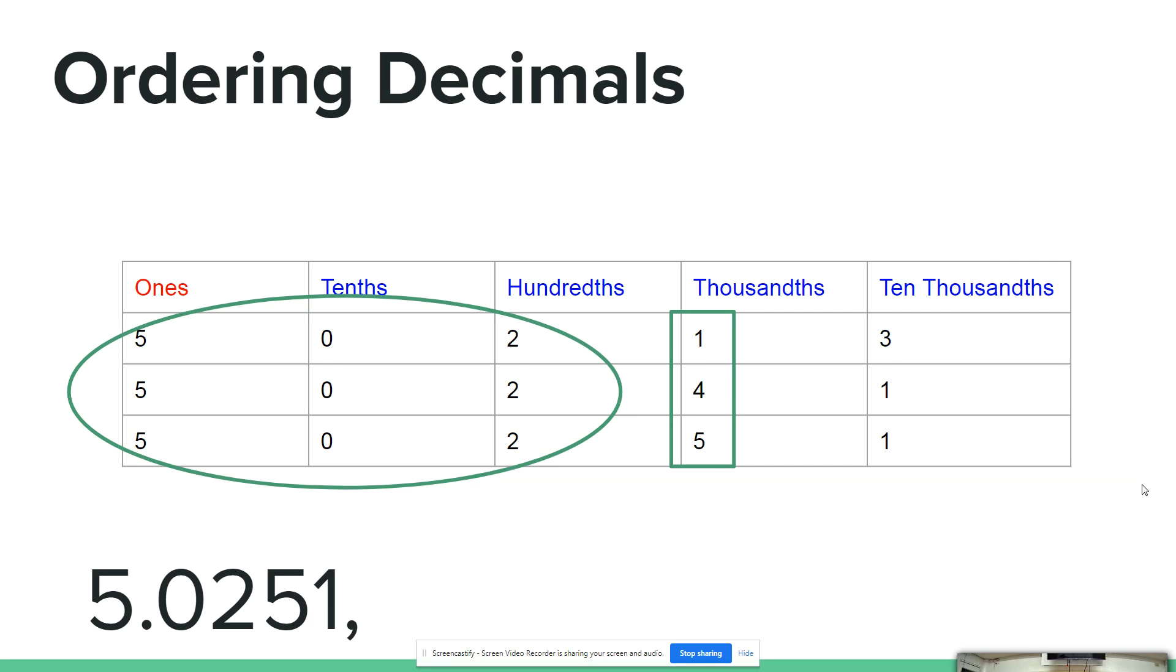5 has the highest value. Therefore, we have 5.0251 first and 5.0241 on the second number and 5.0213 with the least value.